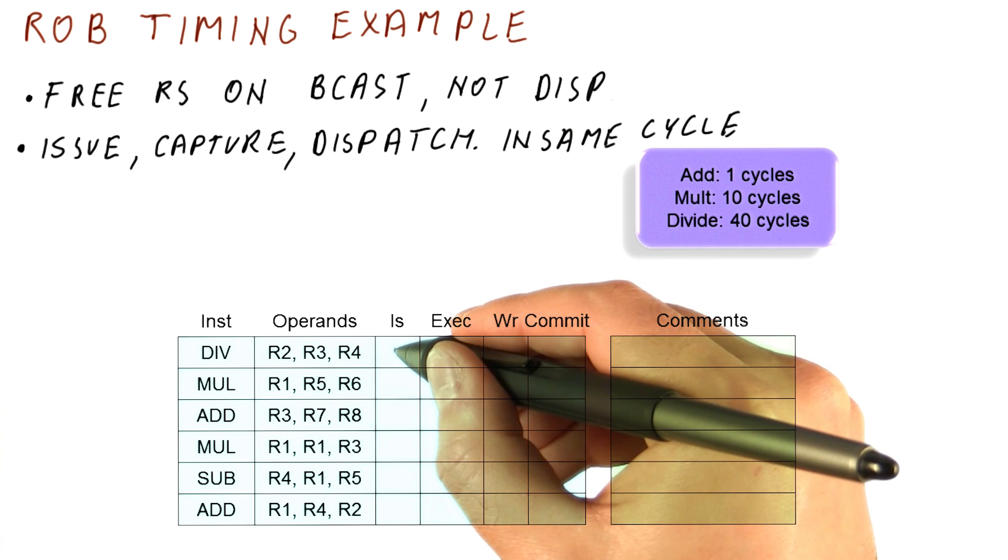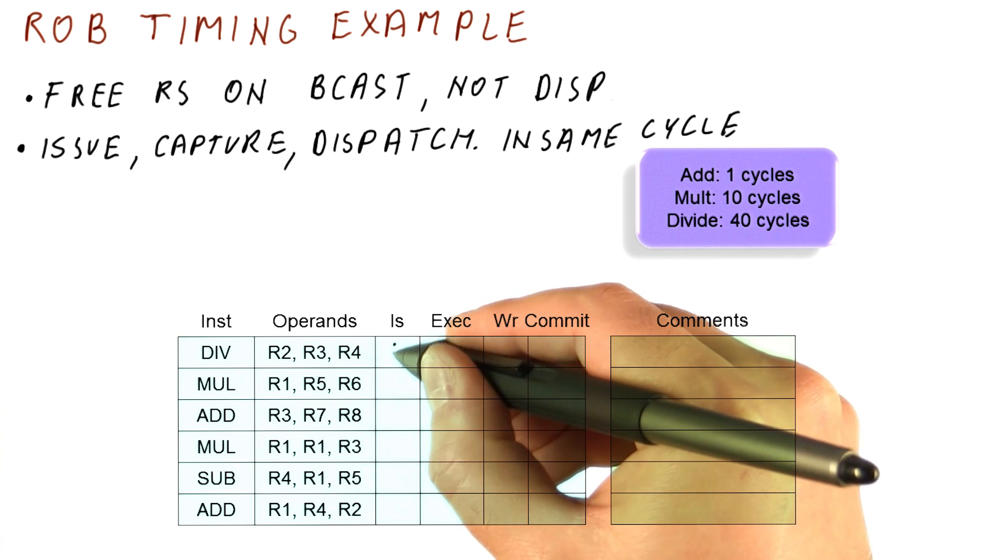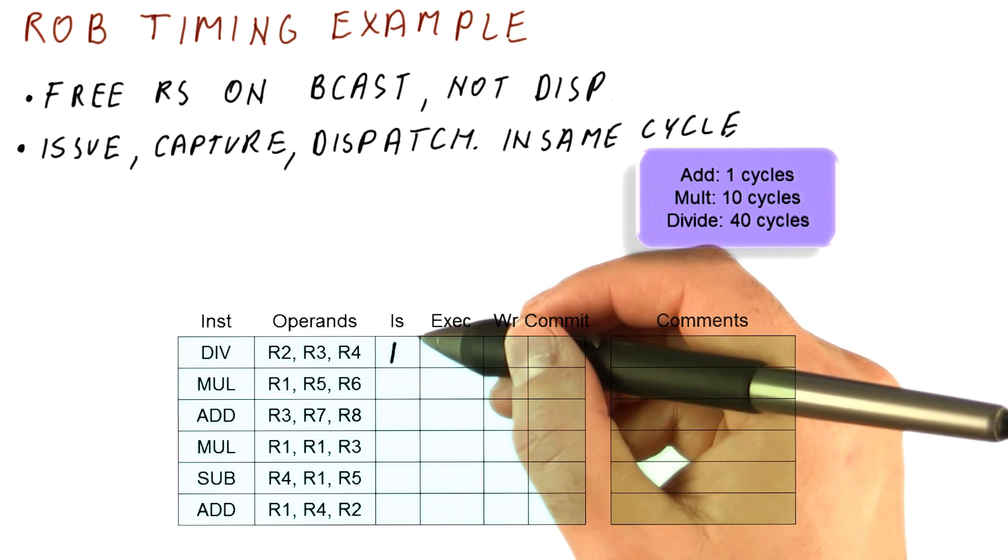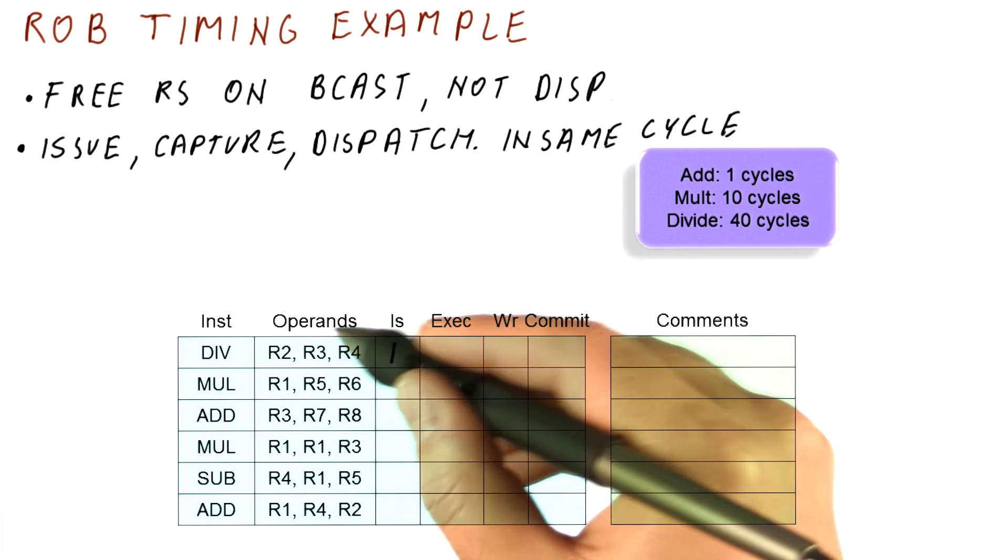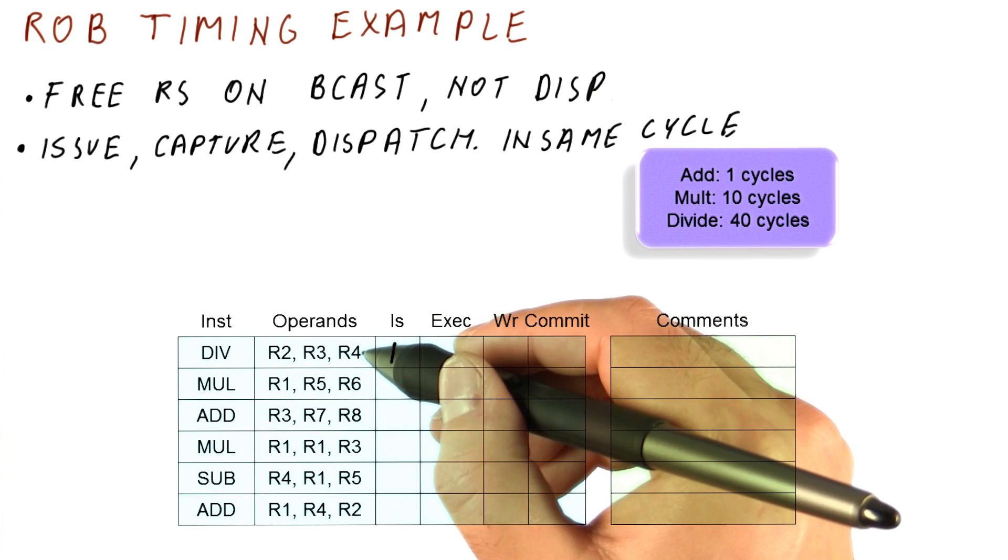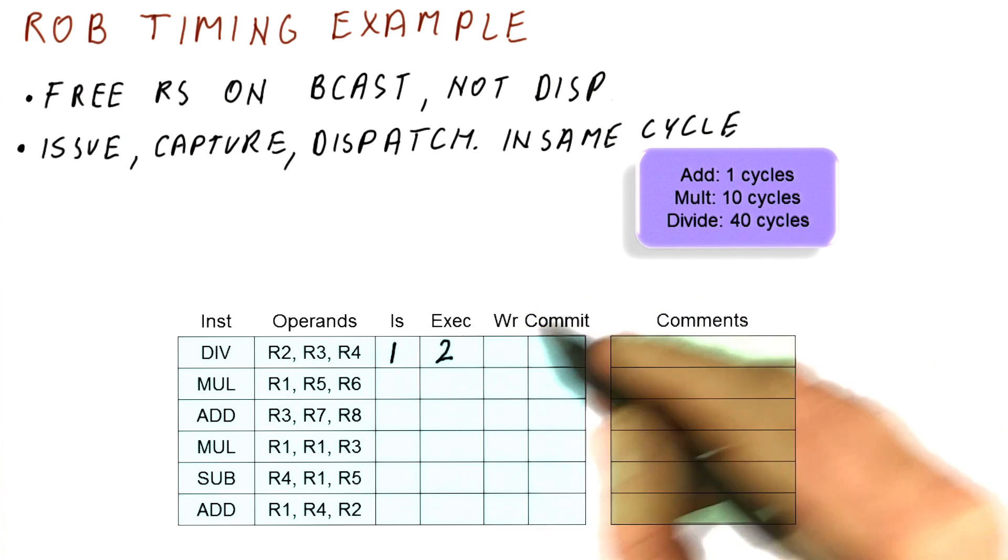So let's see, in cycle one, we will try to issue the first instruction. And nothing else can happen because we don't have any other instructions in the processor. This instruction, of course, being the first one, we know that it doesn't depend on anything, so it will begin executing in the second cycle.